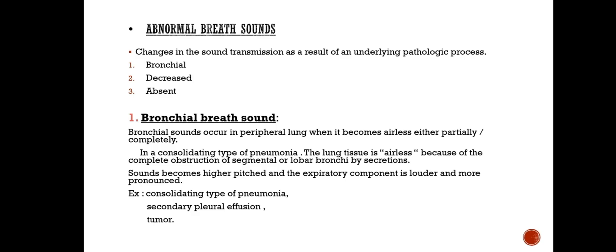Abnormal breath sounds result from changes in sound transmission due to an underlying pathologic process. These include bronchial breath sound, decreased breath sound, and absent breath sound. Bronchial sounds occur in peripheral lung when it becomes airless, either partially or completely. In consolidating pneumonia, the lung tissue is airless due to obstruction of segmental or lobar bronchi by secretions. Sounds become high-pitched and the expiratory component is louder. Examples: consolidating pneumonia, secondary pleural effusion, and tumour.